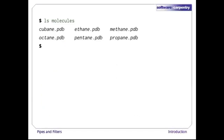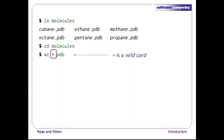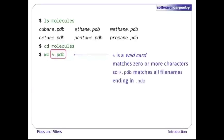We'll start with a directory called molecules that contains six files describing some simple organic molecules. The .pdb extension indicates that these files are in protein databank format, a simple text format that specifies the type and position of each atom in the molecule. Let's go into that directory with cd and run the command 'wc *.pdb'. The star in *.pdb is a wildcard character — it matches zero or more characters, so the shell expands *.pdb to be the complete list of .pdb files.